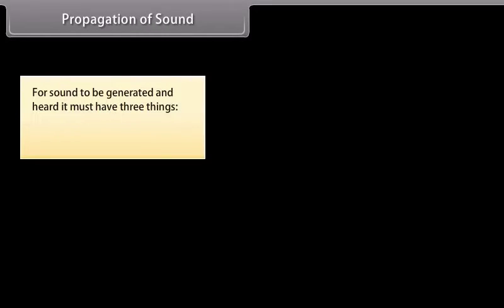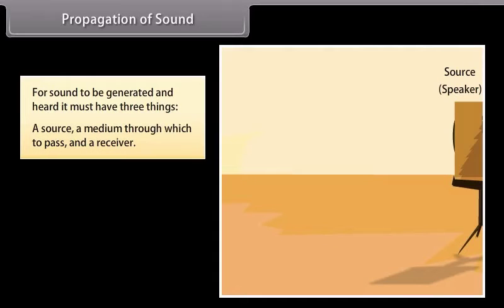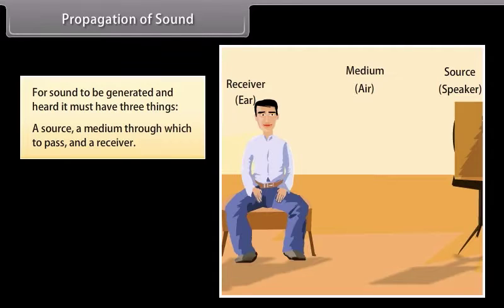Propagation of sound. For sound to be generated and heard, it must have three things: a source, a medium through which to pass, and a receiver. Let us assume the source is the speaker's voice, the medium through which it is transmitted is air, and the receiver is the listener's ear.